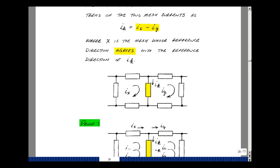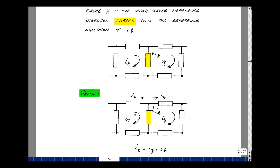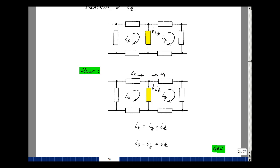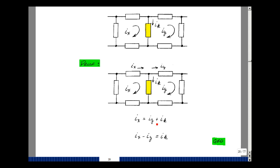Now why would that be true? Well the mesh current I sub x is also the element current in this element, and the mesh current I sub y is the element current in here. The current I sub x is equal to I sub k plus I sub y. So now we could solve for I sub k. So bringing this on the other side of the equation, we have that I sub x minus I sub y is equal to I sub k. So again, I sub k agrees with I sub x, and disagrees with I sub y. We're going to add the one that agrees and subtract the one that disagrees.